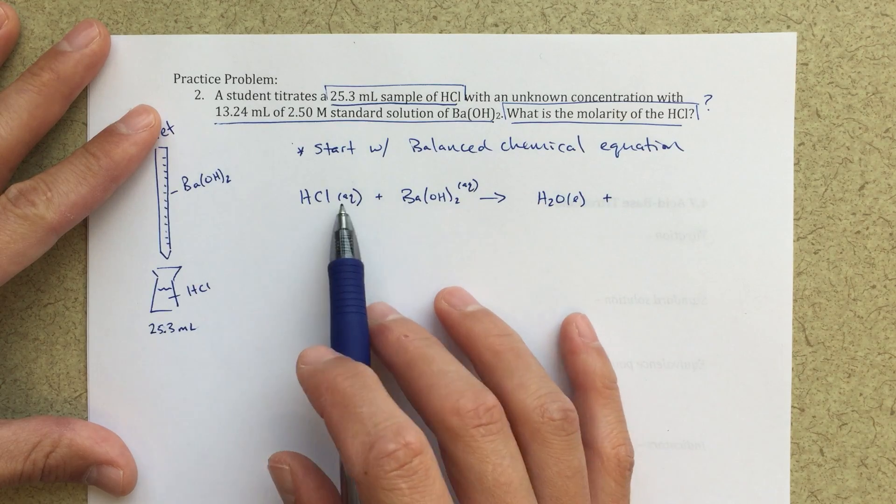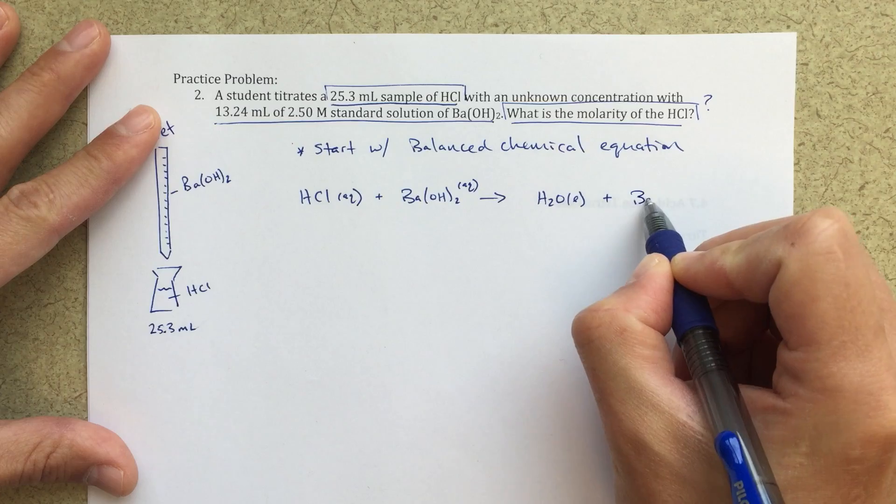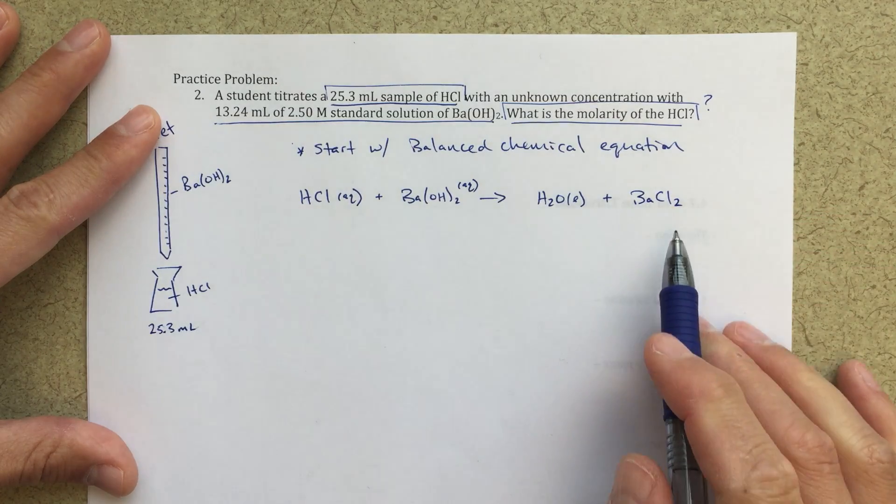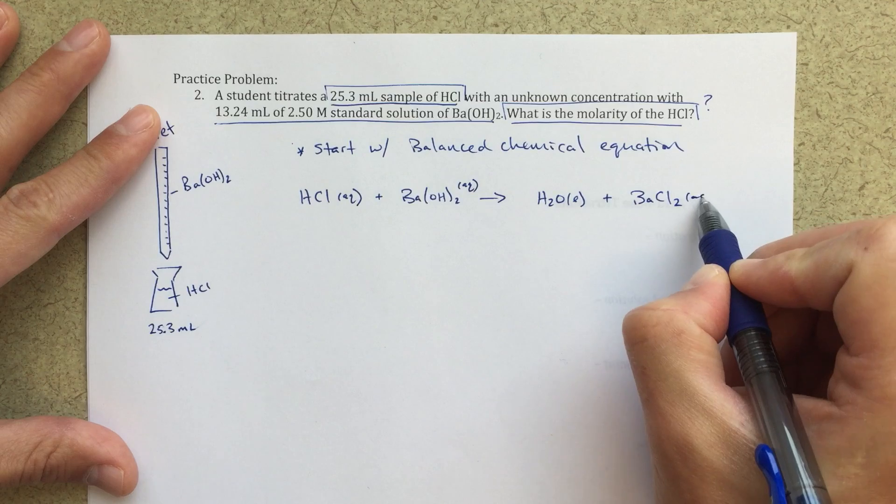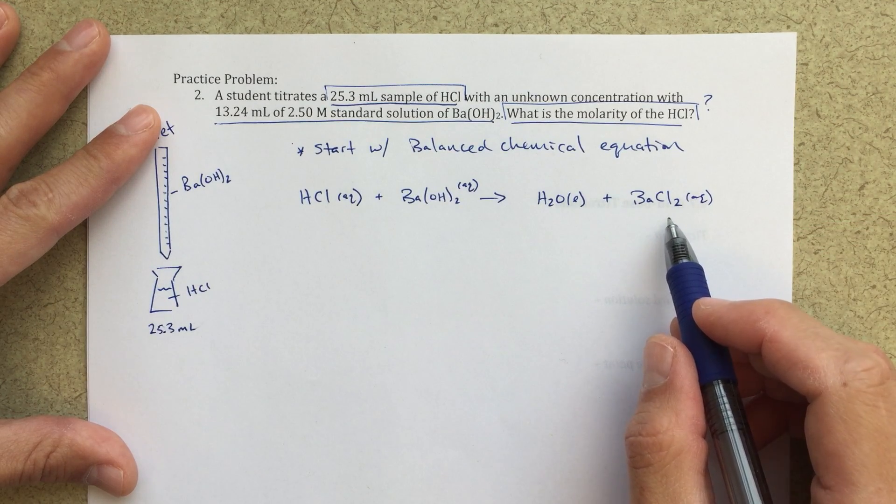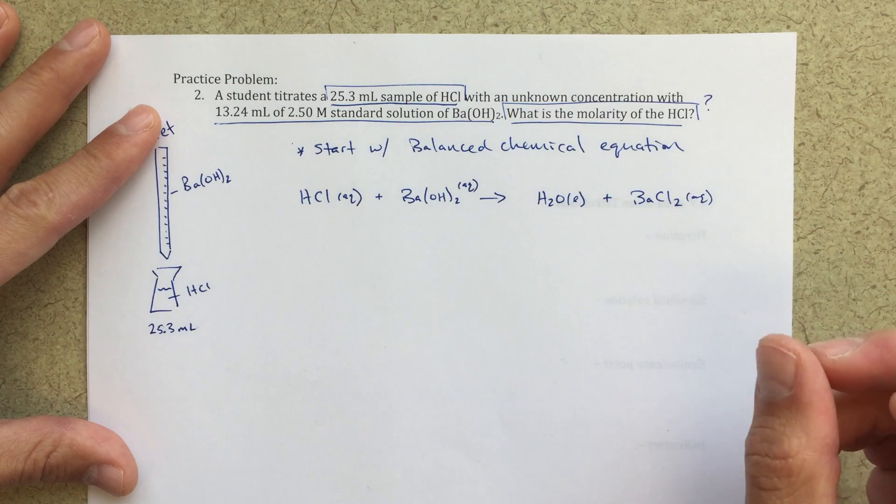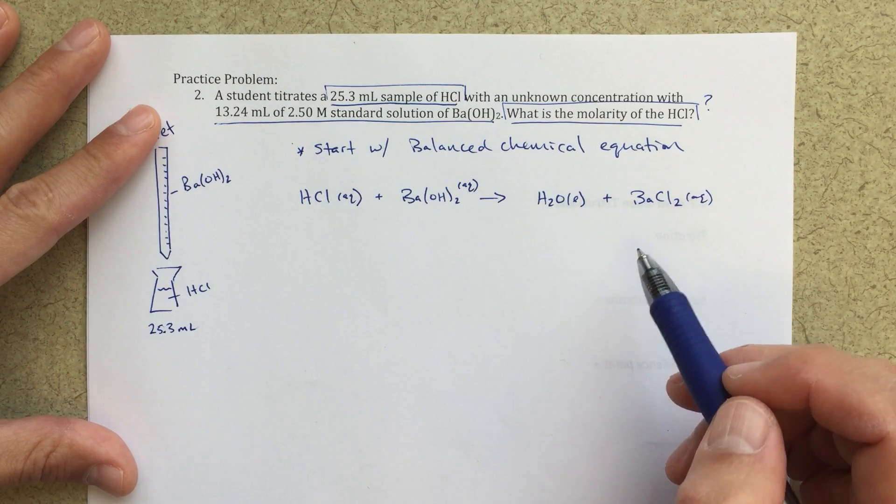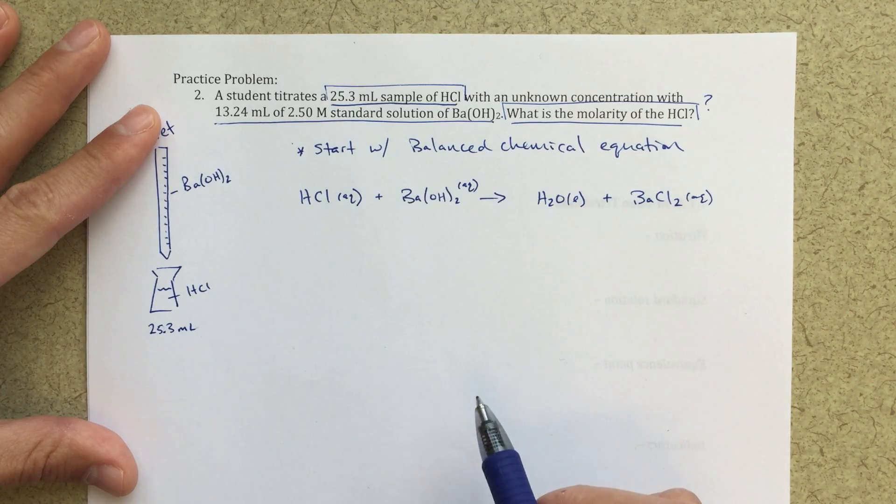What's left over? Barium and chlorine. BaCl2, and I think a lot of people will again miss this 2 here. Barium is going to have a +2 charge. Chlorine is going to have a -1 charge. So I need to balance that out. It's an ionic compound.